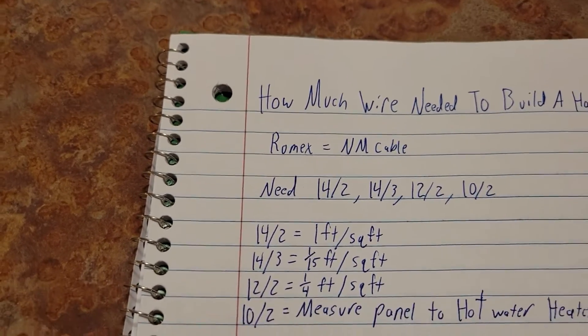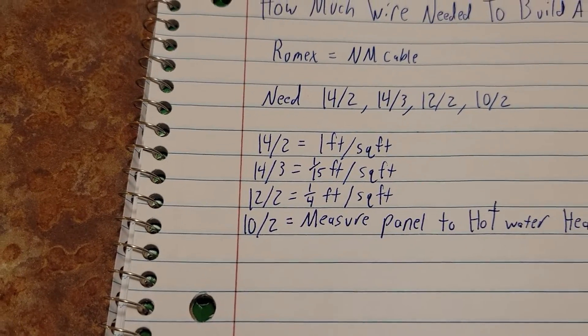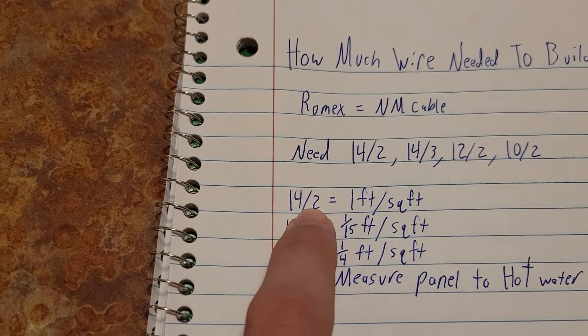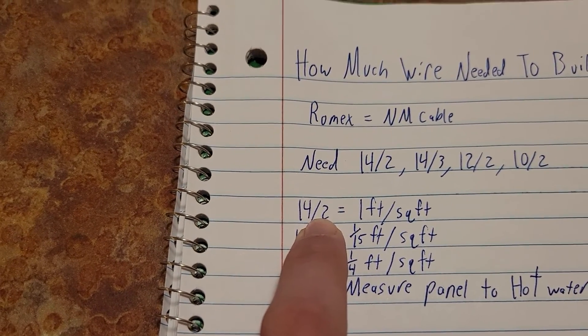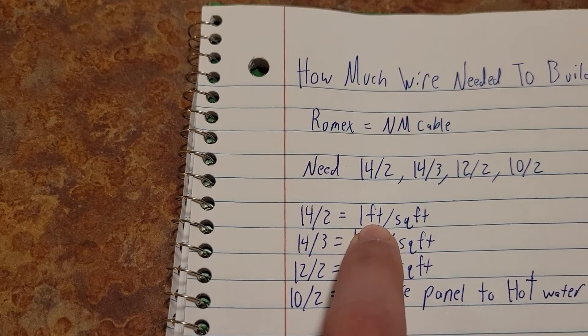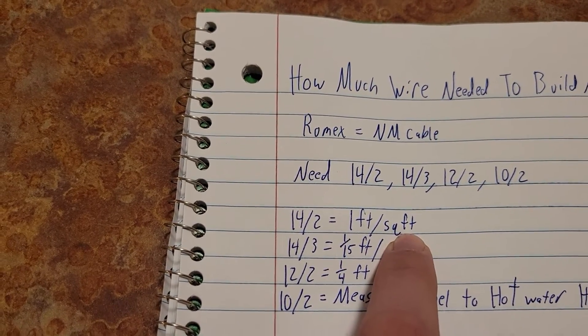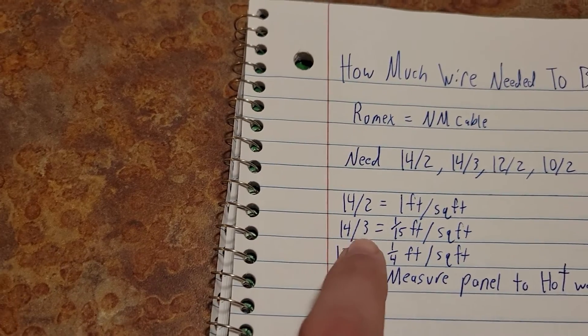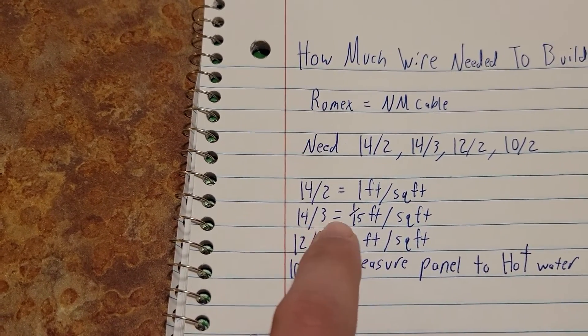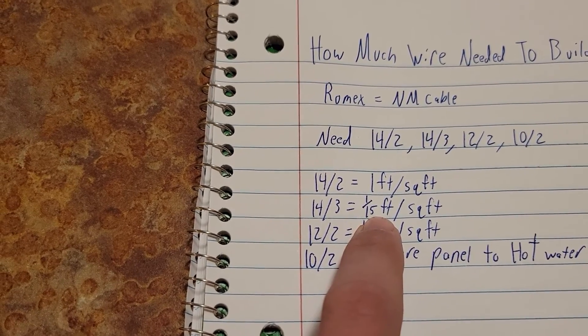Now we've got a few formulas here that you're going to need to know. To get the amount of 14/2 you need, you're going to multiply 1 foot of 14/2 times the amount of square feet in the house. To get the amount of 14/3 you're going to need, you're going to multiply 1/15th of a foot per square foot of the house.